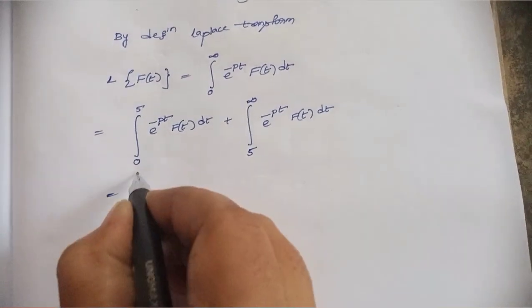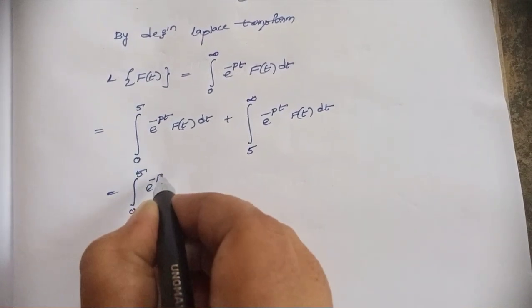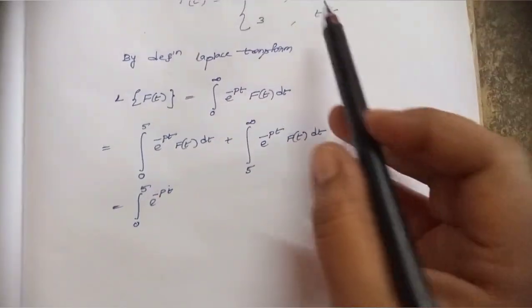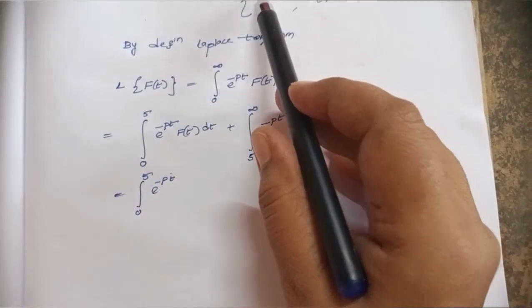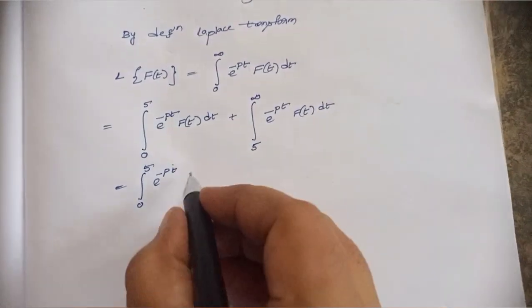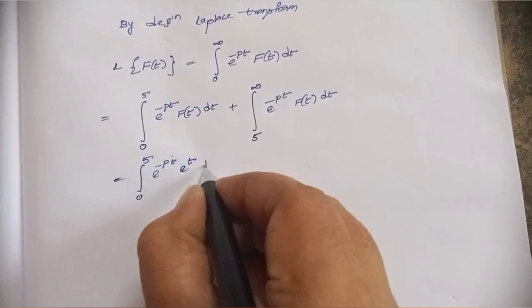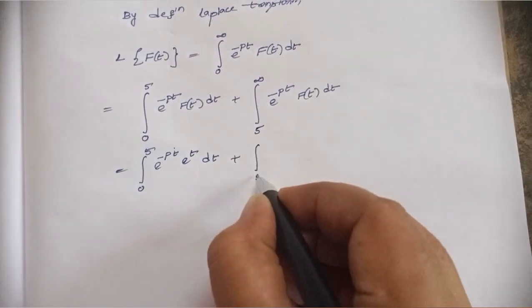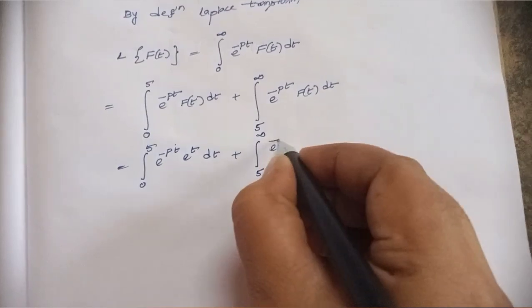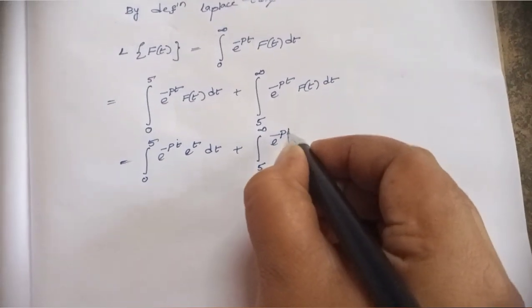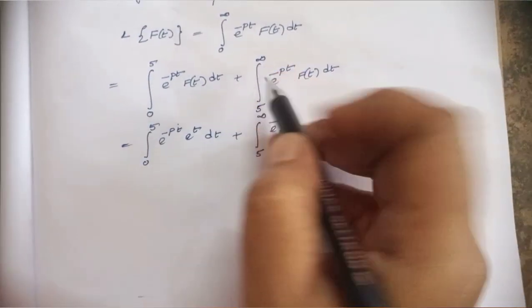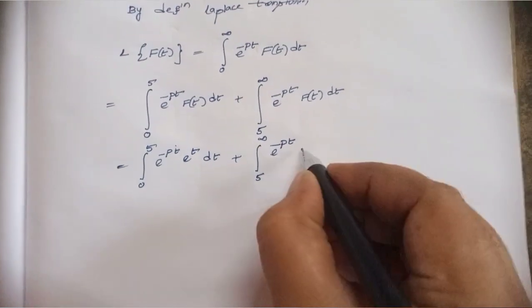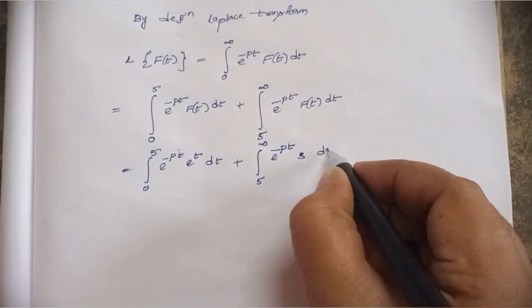Integral from 0 to 5: e^(-pt) · f(t) = e^t, dt. And from 5 to infinity: e^(-pt) · f(t) = 3, dt — since t > 5, f(t) = 3.